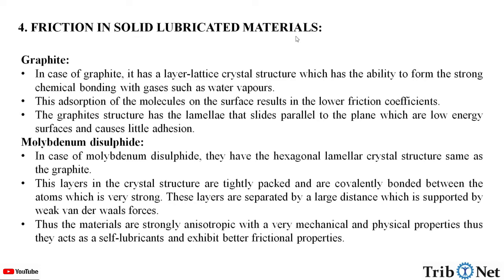Let us understand friction in solid lubricated materials such as graphite and molybdenum disulfide. In graphite, it has a layered lattice crystal structure which has the ability to form strong chemical bonds with gases such as water vapors. This adsorption of molecules on the surface results in lower friction coefficients. The graphite structure has lamellae that slide parallel to lines that are low energy surfaces and cause little adhesion.